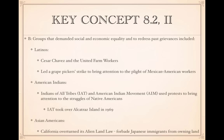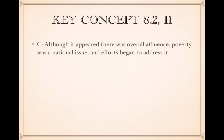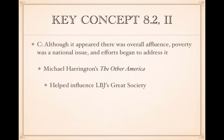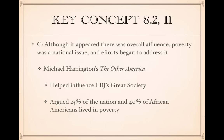Although the 1950s appeared affluent on the surface, poverty was a serious national issue. Michael Harrington, an influential journalist, wrote The Other America, which helped influence LBJ's Great Society program. He argued that 25% of the nation and 40% of African Americans were living in poverty, and that Native Americans were the hardest-hit group — so although the country appeared affluent, in reality it was not.